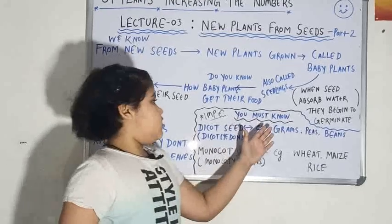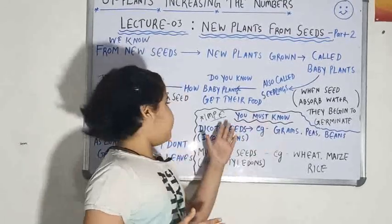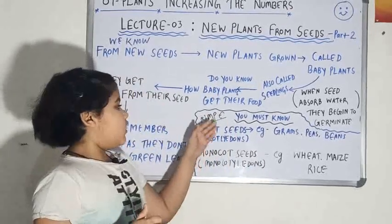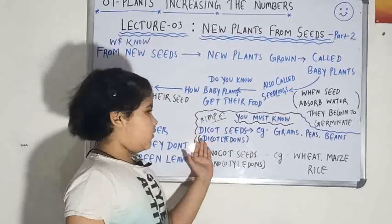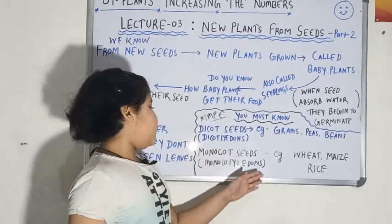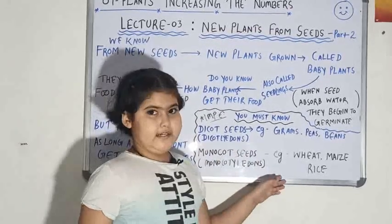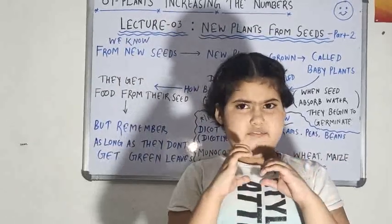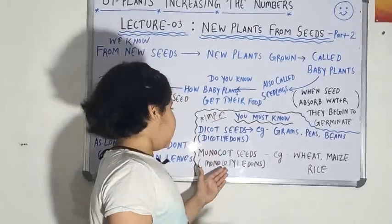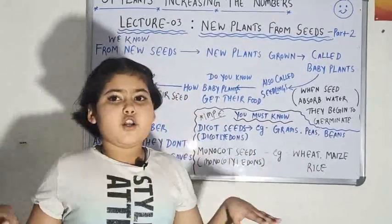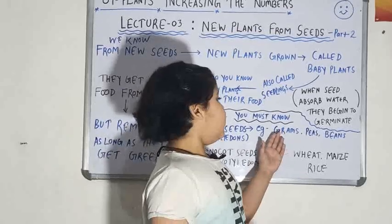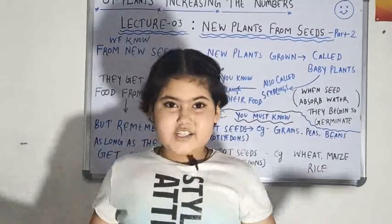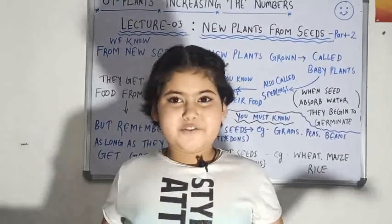So now there were some important notes that we must know. It can come in our exams also about dicot seeds called dicotyledons and monocot seeds called monocotyledons. So dicot seed has two seed leaves. Monocotyledon seeds have one seed leaf. Examples are gram, peas, beans for dicotyledons, and wheat, maize, rice for monocotyledons. Understand?